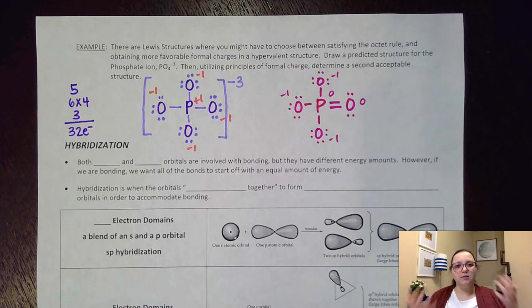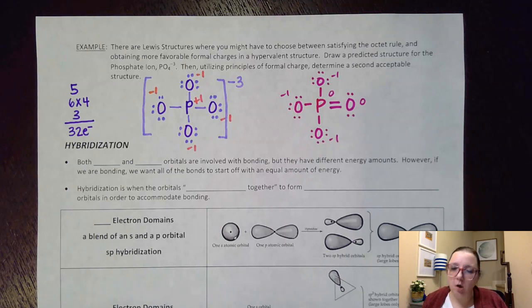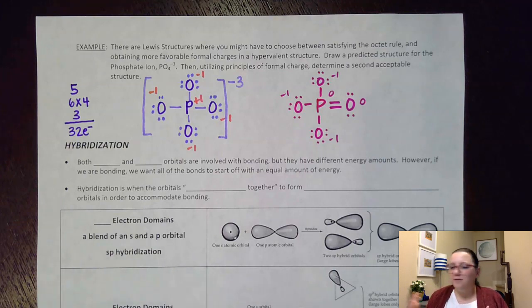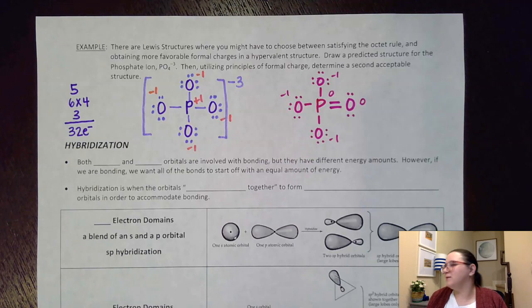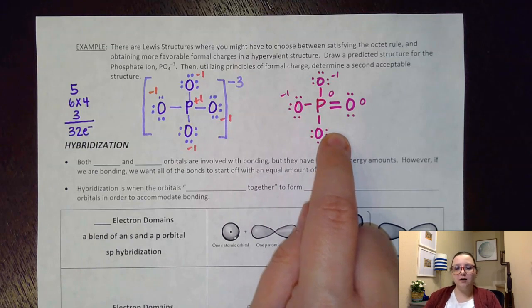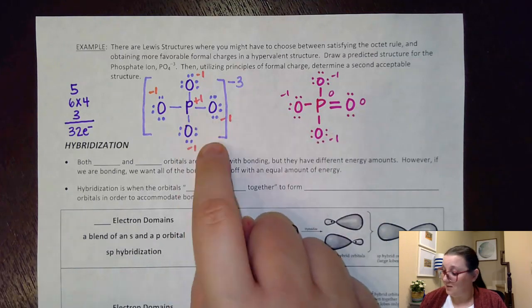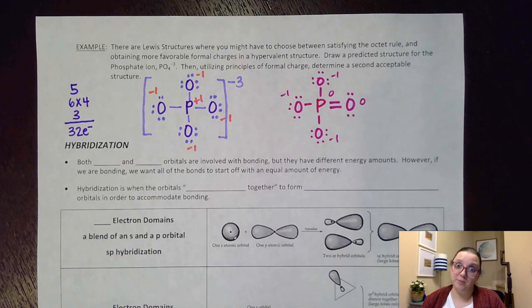If you ever look up a polyatomic ion Lewis dot structure — like phosphate, sulfate, or chlorate — and notice an unexpected double bond, it's because of formal charge. In pre-AP, I can always tell when students copy Lewis dot structures off the internet, because those structures have a double bond they wouldn't have predicted. When they bring it to me I ask, 'So you know about formal charge?' And they say, 'What are you talking about?' Because that's not the predicted structure — to draw that, you need to know about formal charge.